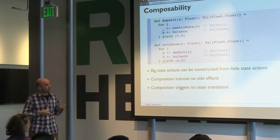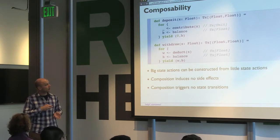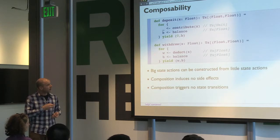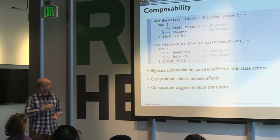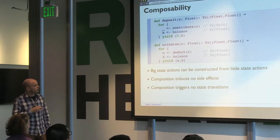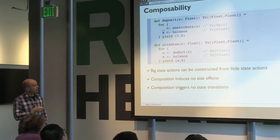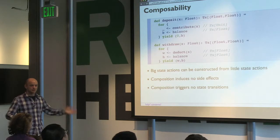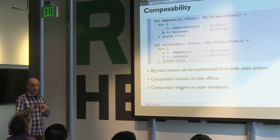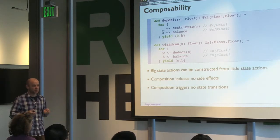Similarly, we can write a withdraw function that calls deduct (a State case class instance), takes the first tuple argument which is the amount deducted, calls balance to check the balance of the new account, and returns the amount withdrawn and the new balance. The point is that we can make these more complicated state instances by building them up from smaller ones. This looks imperative — it looks like we're calling deduct and balance — but just like before, all of this code is just returning a new instance of State. It's a deferred action or callback: give it an account and it will run everything and tell you what the new account is. There are no side effects, no println statements doing things on the side.